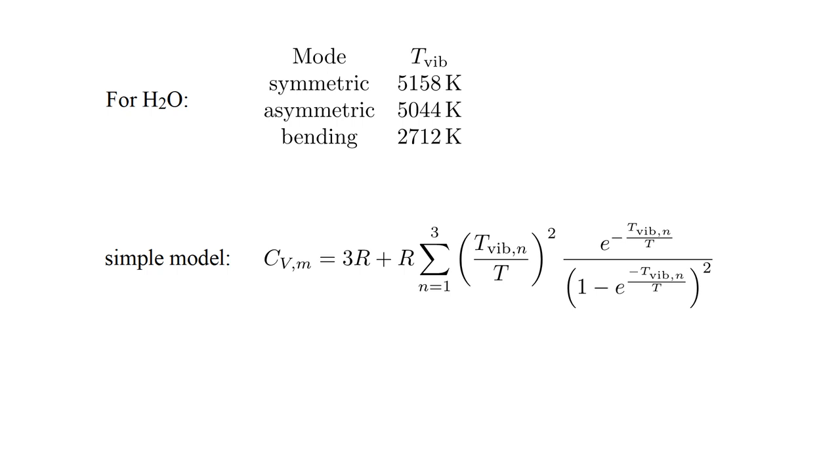We can use these to form a simple model of water vapor molar heat capacity. We have three r for the six degrees of freedom for translation and rotation of and about the center of mass. Then for each of the three vibrational modes, we add an Einstein model term at the corresponding vibrational temperature.